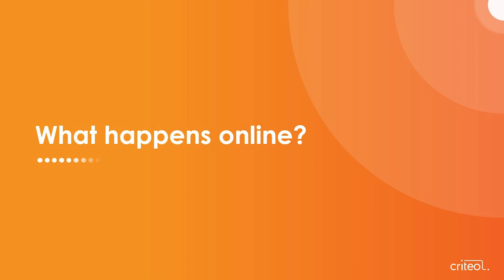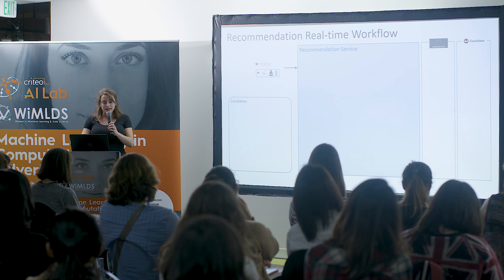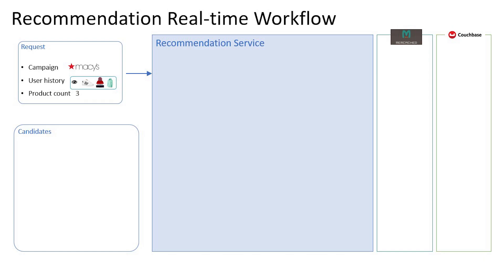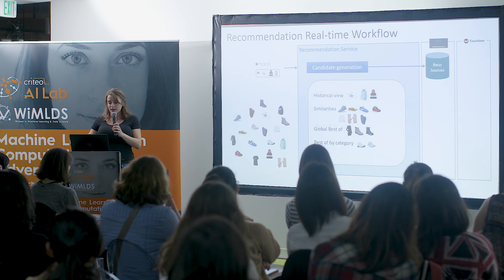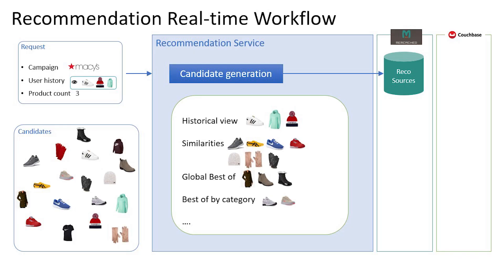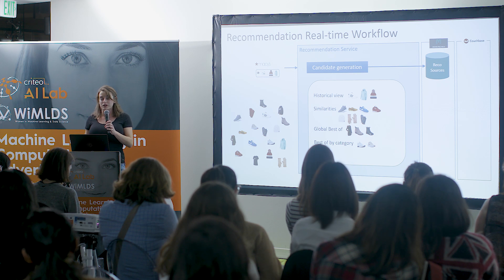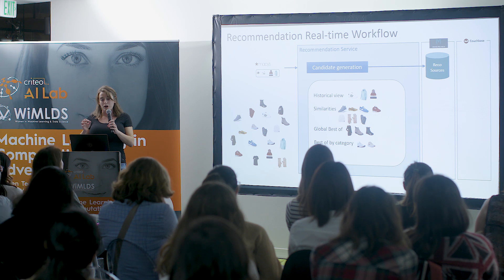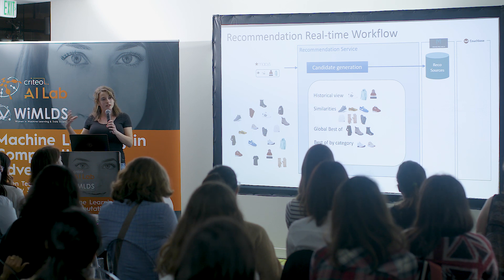So what happens online? Imagine you receive a request from Macy's for a retargeting campaign. The user has seen a pair of shoes, a winter hat, and a shirt, and you're asked to recommend three products. The first step is to get all the sources from the Memcache we pre-populated. We gather candidates from different sources: historical, similarities, global best-of, best-of by categories. For each product, we have 15–25 similarities and complementarities, which is how we reduce the space of products to evaluate online.